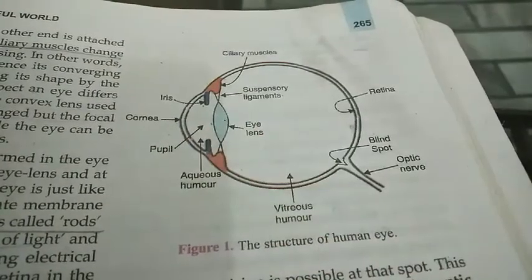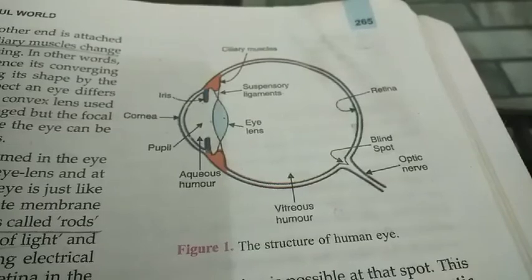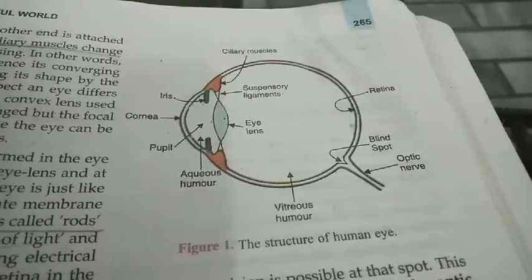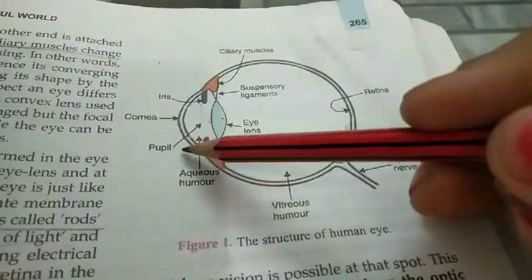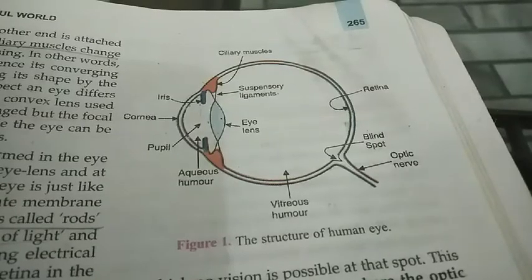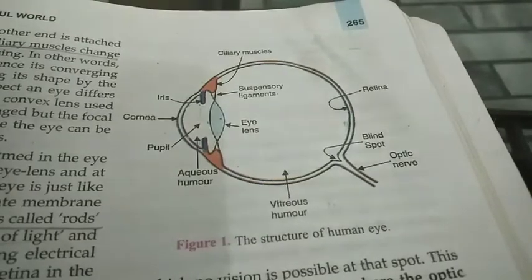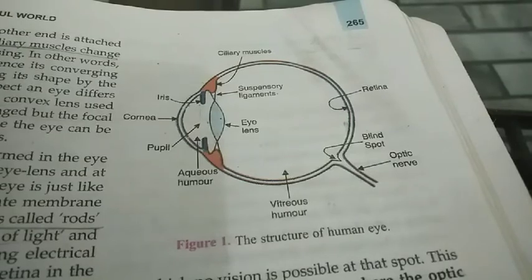Cornea is the outermost part of the eye. It is a transparent part of the eye and allows the light to enter the eye. Second, we have the Iris. Iris is a circular dark diaphragm having a hole in its center, and this hole is known as the Pupil. The circular diaphragm has muscles and colored pigments, and these colored pigments are responsible for the color of our eye. The function of the iris is to control the size of the pupil. The pupil controls and regulates light entering the eye — it becomes small when bright light falls on the eye and becomes wide when there is dim light.